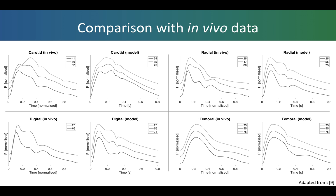We also compared the shapes of pulse waves with in vivo data. The carotid waveforms showed similar changes with age to those measured in vivo, with the secondary systolic peak increasing with age. The same could also be said for the radial waveforms top right and the digital waveforms bottom left. The femoral waveforms also mirrored those measured in vivo with the disappearance of the diastolic peak with age.